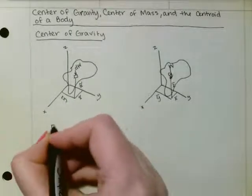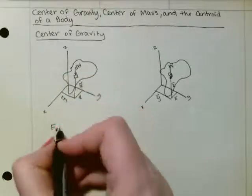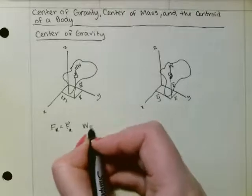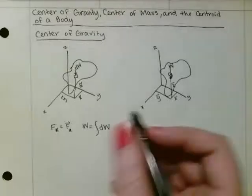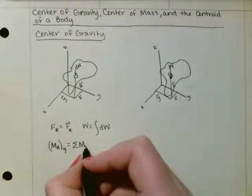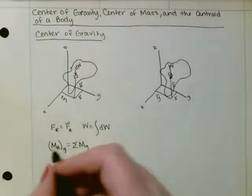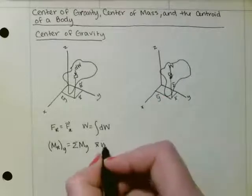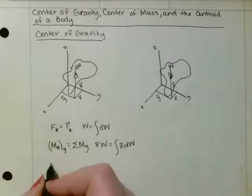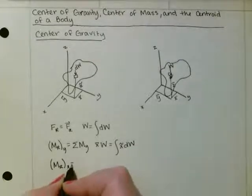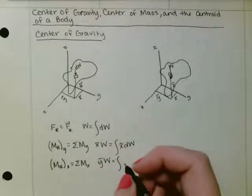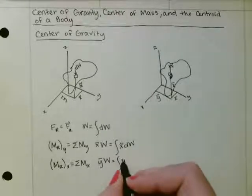If we wanted to get our resultant force of all of these differential weights, we would just sum all of the forces in the z direction, such that the weight would be equal to the integral of the differential weights. If we wanted to find the resultant moment about the y axis, we would sum all of the moments about the y axis, such that our resultant moment is x̄ times w, which is equal to the integral of x̃ dw. And then the resultant moment about the x axis: ȳw is equal to the integral of ỹ dw.